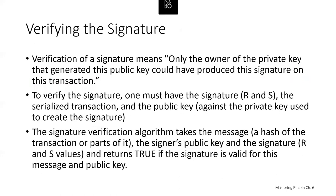To verify a signature, one must have the signature (the R and S values), the serialized transaction, and the public key. You don't have the private key — you have the signature and the public key, and together with the transaction they allow you to verify that the signature did in fact come from the private key, even though you don't know what the private key value is. Verification means only the owner of the private key that generated this public key could have produced this signature. The verification algorithm takes the message, the signer's public key, and the R and S values, and returns true if the signature is valid.